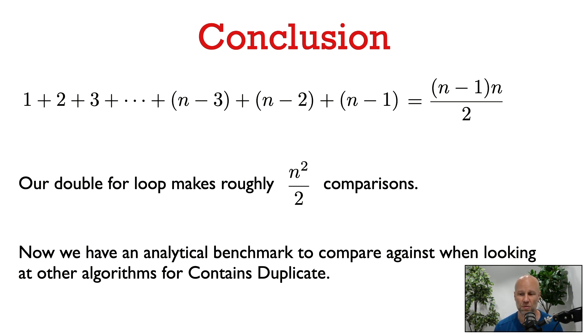So in our double for loop, we make n minus 1 times n divided by 2 many comparisons, or roughly n squared divided by 2 comparisons. So now we've analyzed this algorithm. This is how many comparisons that we're going to have to make in this worst case, where there is no duplicate and we have to run through both for loops. And this gives us an analytical benchmark that we can try to beat when we look for better algorithms for the contains-duplicate problem.